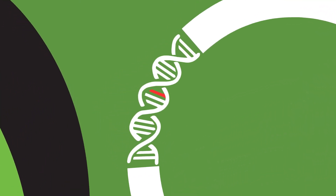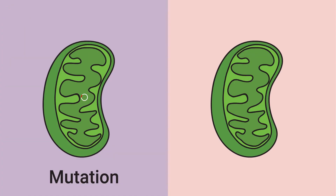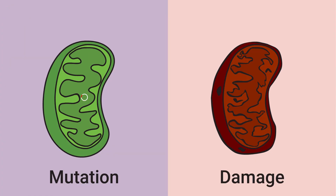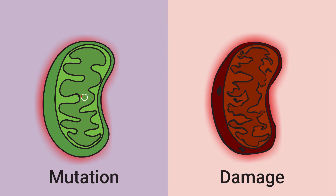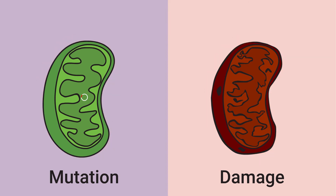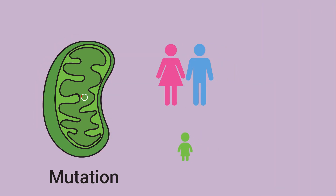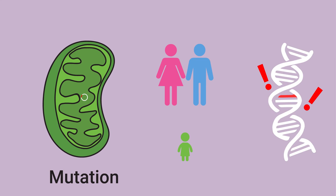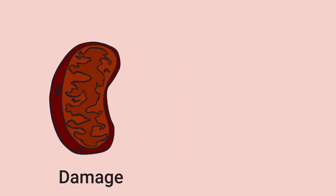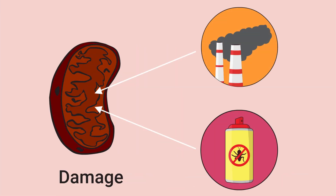Sometimes mitochondria may mutate. Other times, they can be damaged. When this happens, the mitochondria's ability to make energy and perform other critical functions may be impaired. Mutations can be inherited or developed spontaneously, whereas damage can be caused by exposure to toxins like pollutants.